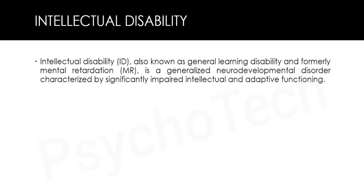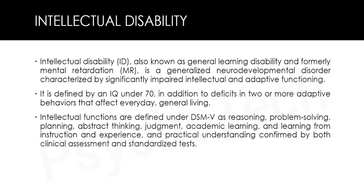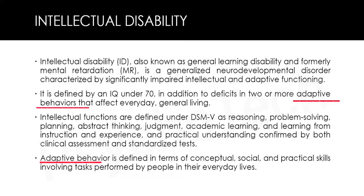The next type is intellectual disability, also known as general learning disability and formerly mental retardation (MR). It is a generalized neurodevelopmental disorder characterized by significantly impaired intellectual and adaptive functioning. It is defined by an IQ under 70, in addition to deficits in two or more adaptive behaviors. Under DSM-5, intellectual functions include reasoning, problem solving, planning, abstract thinking, judgment, academic learning, and practical understanding. Adaptive behavior covers conceptual, social and practical skills in everyday life.